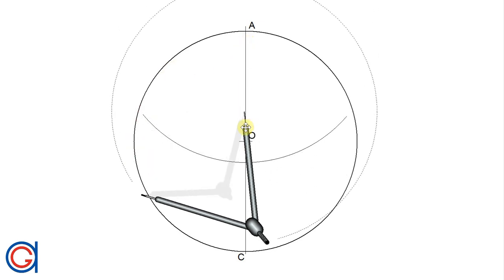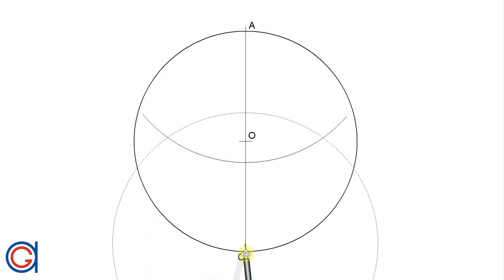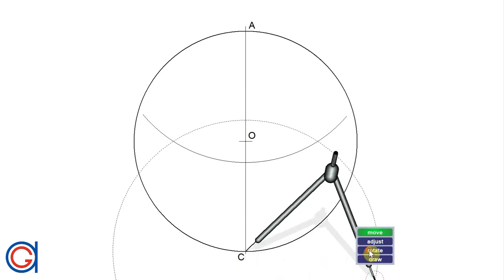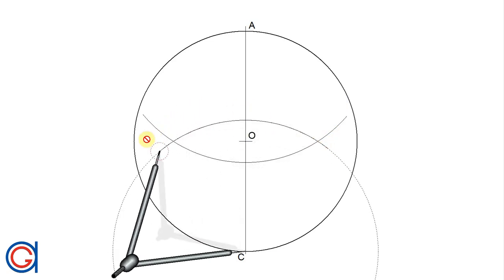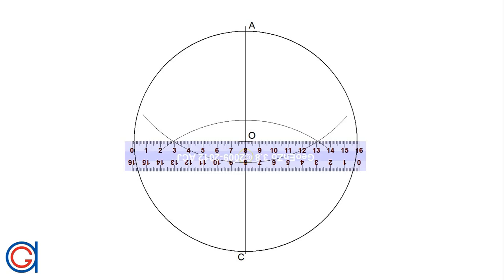And now with the same radius and setting our compass on point C, we're going to scribe another arc until it cuts our previously drawn arc at two points which can be seen here.